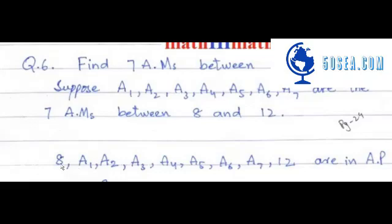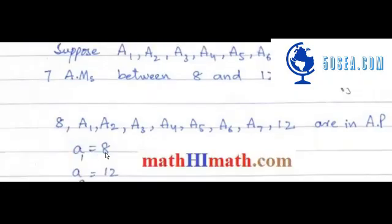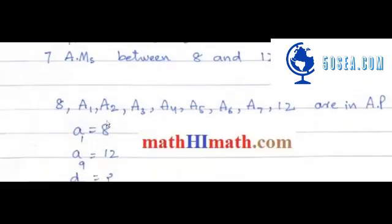So we have 8, and then counting the terms: 1, 2, 3, 4, 5, 6, 7, 8, 9. Here you have a1 and a9 is 12. We need to find the common difference.